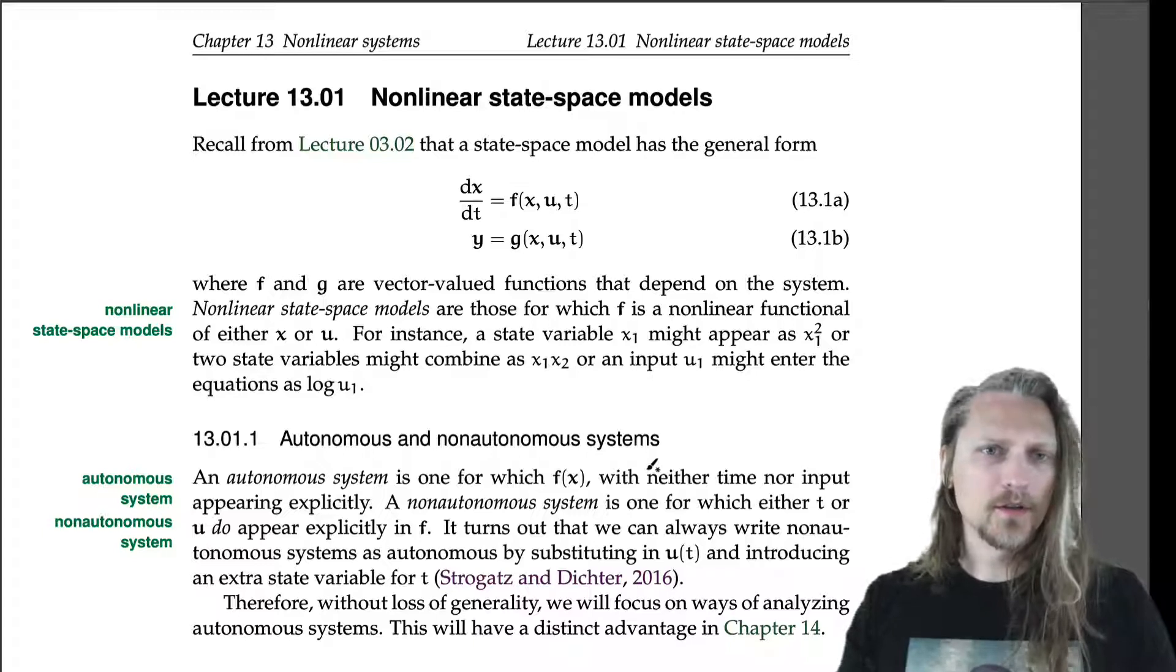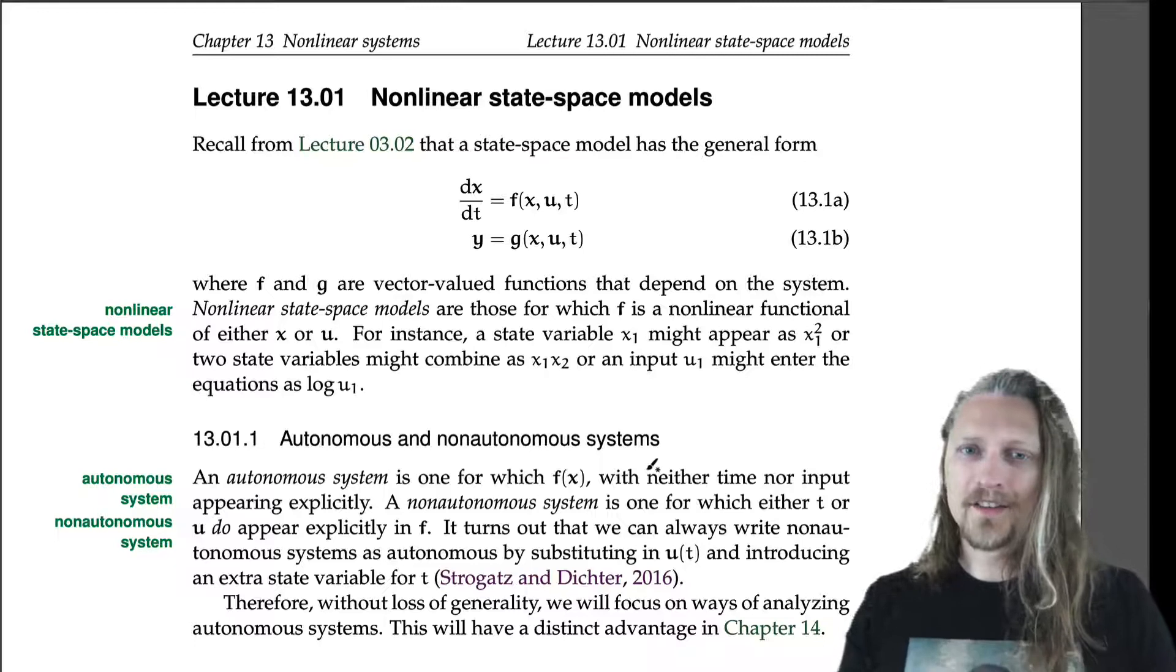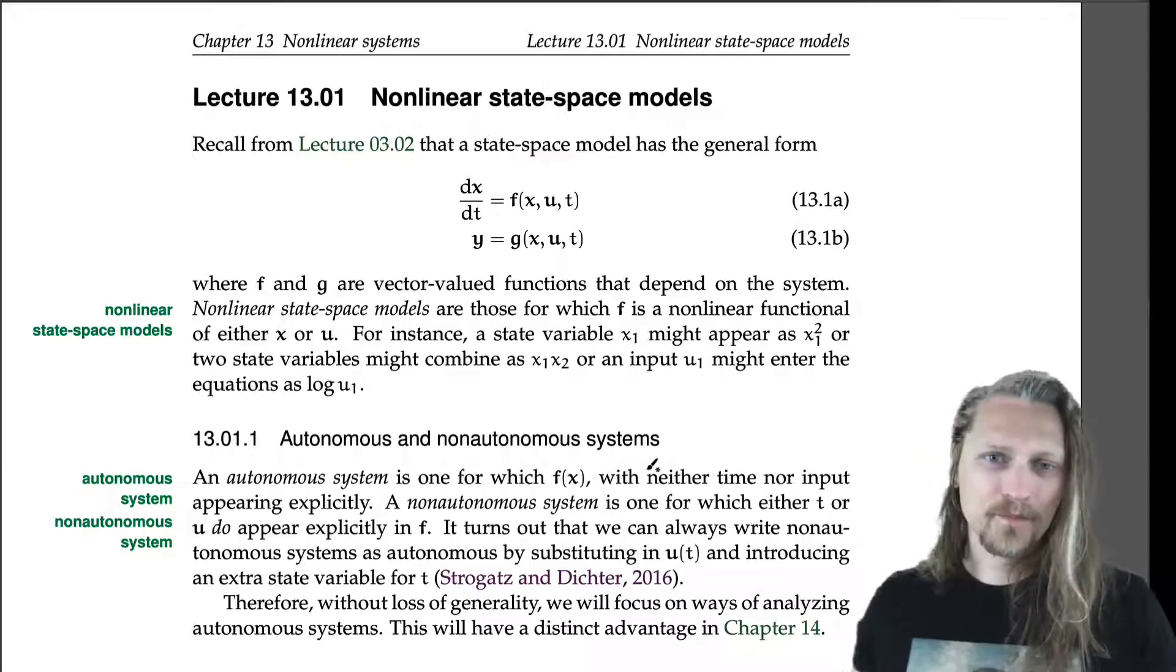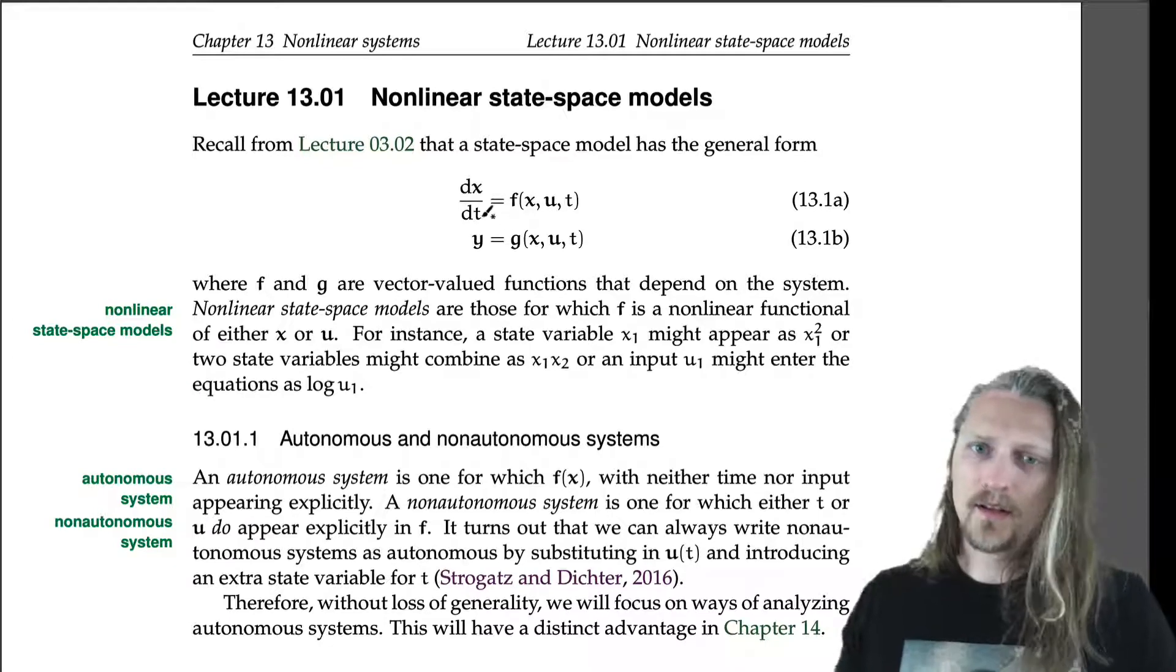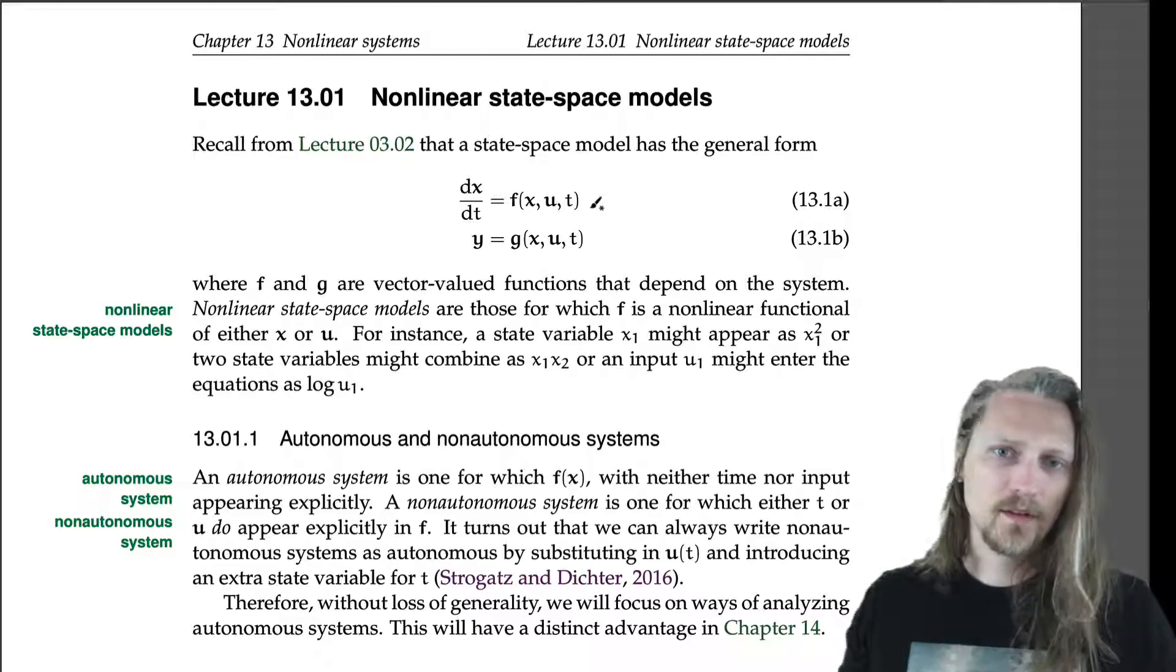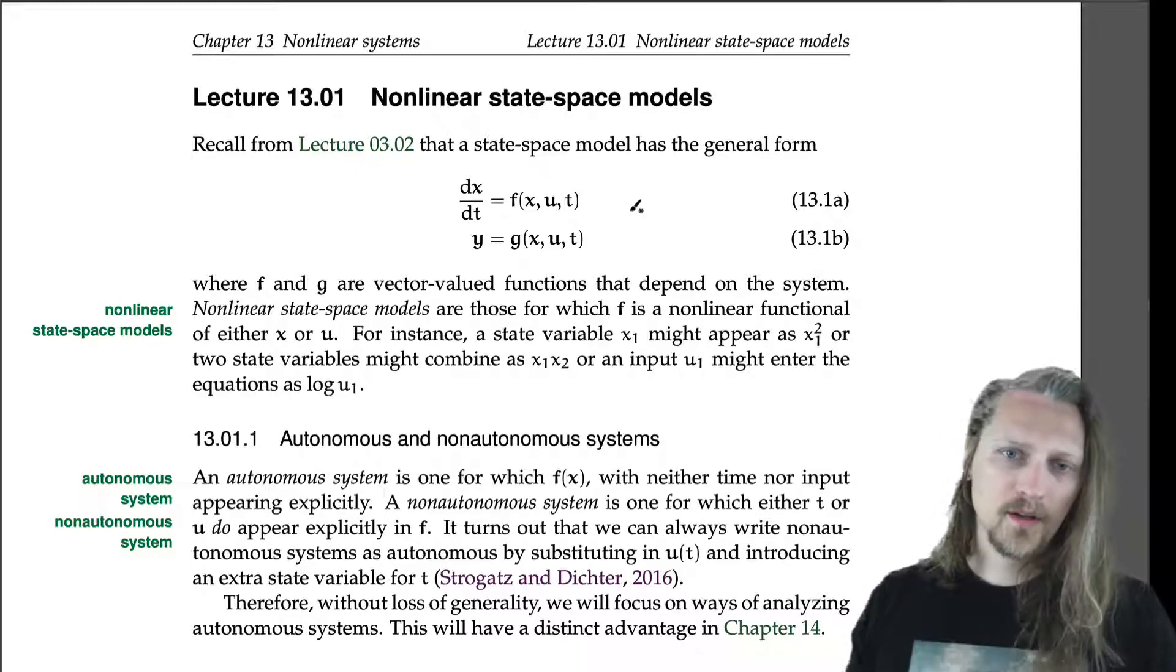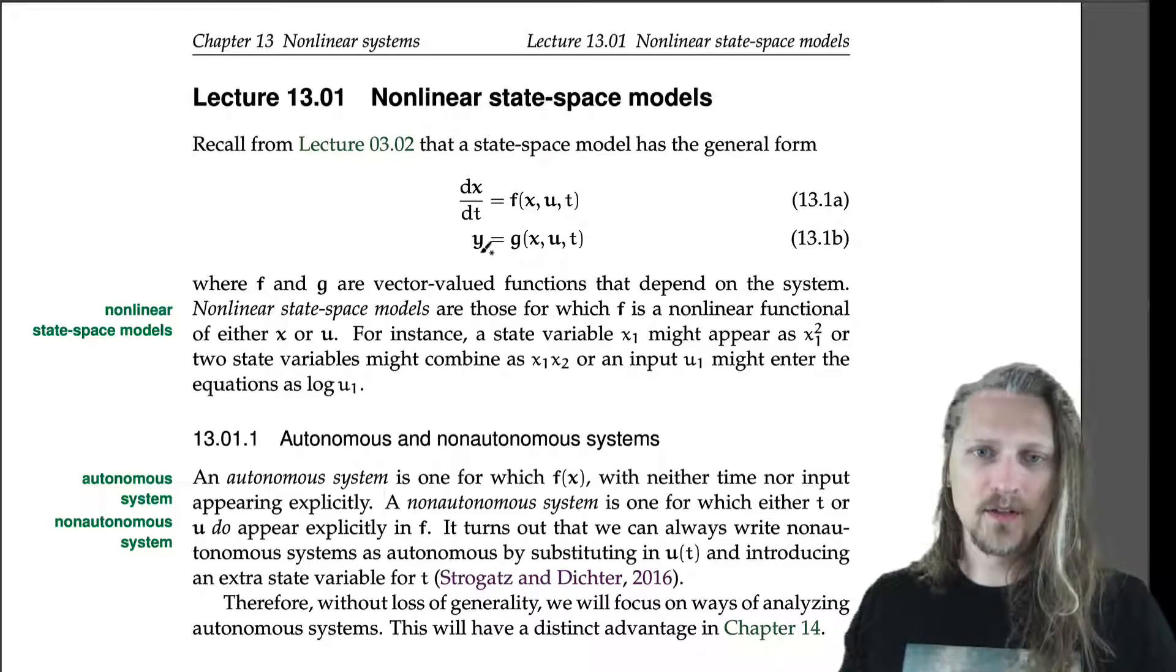Alright, Lecture 13.1: Nonlinear State Space Models. Recall from Lecture 3.2 just a few minutes ago that a state space model has the general form dx/dt, the time rate of change of the state vector, equals some function of the state, the input, and time. That's the general state equation. The general output equation is that y, the output, is equal to some function g of x, u, and t.